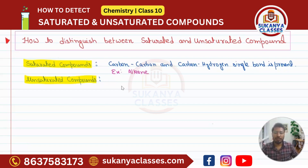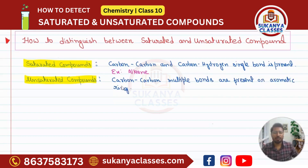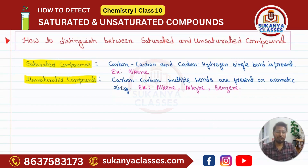Now, coming to the unsaturated compounds. Here, carbon-carbon multiple bonds are present, or an aromatic ring. So if this is present, they will be called unsaturated compounds. For example, you can take alkene, alkyne, or benzene. So these are a few examples. Now you have understood what is saturated and what is unsaturated.